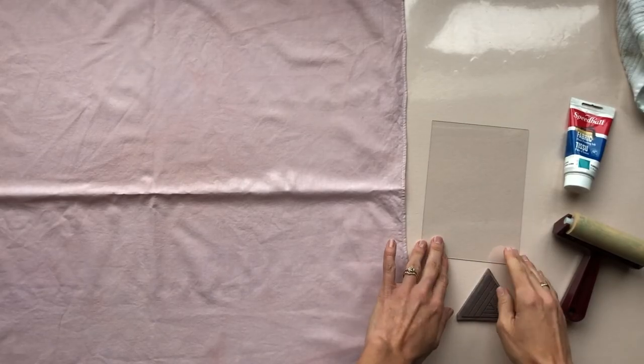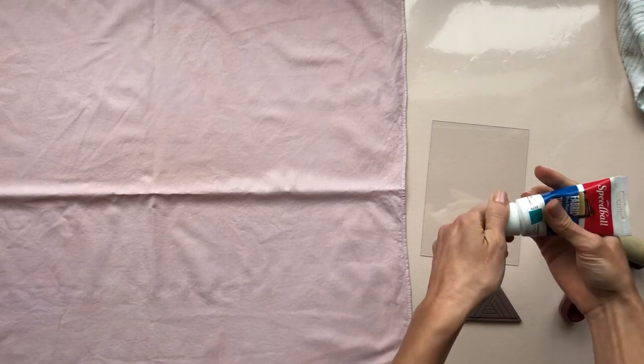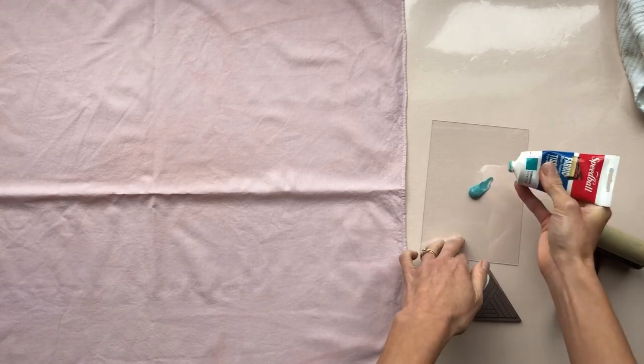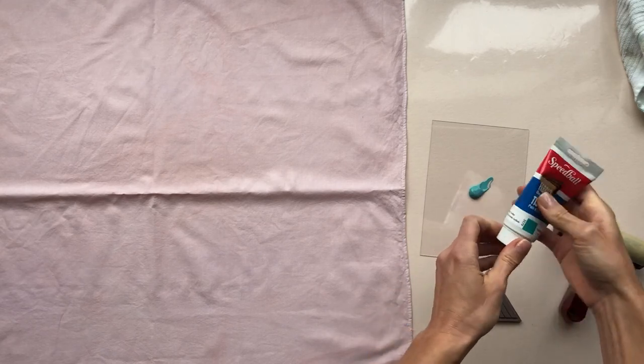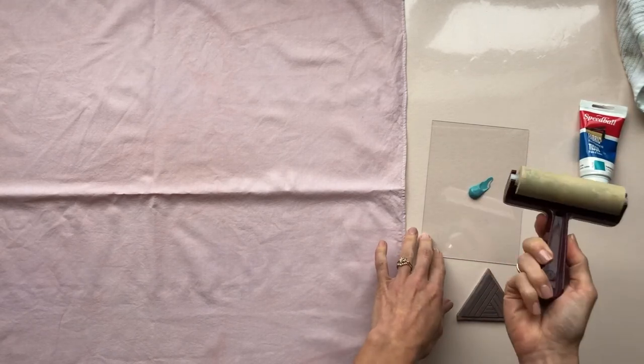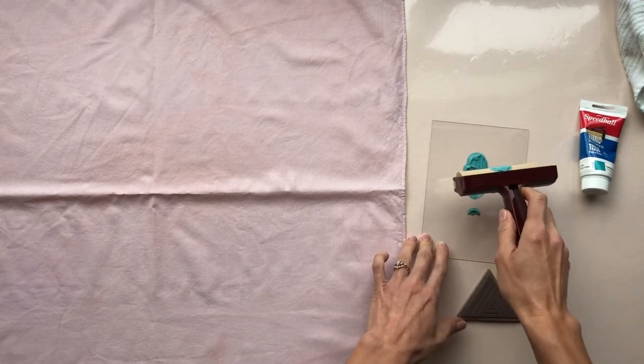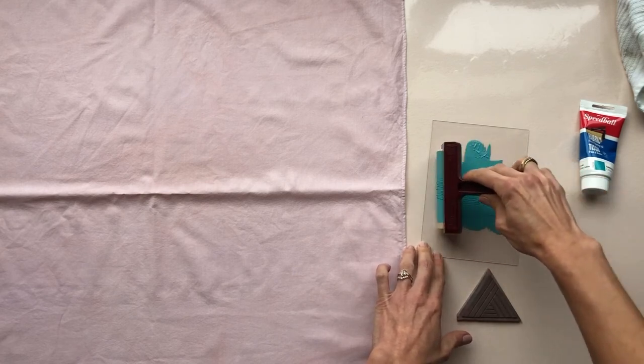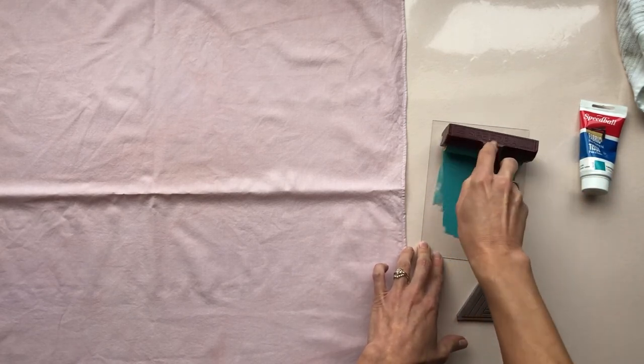I'm going to start by adding some ink to my inking plate. It's better to start with a little bit than a lot. You can always add, but you can't take away so easily. So I'm just doing a little spot of ink and then I'm going to use my brayer to kind of spread it around and I want to go in all directions here and get an even layer.